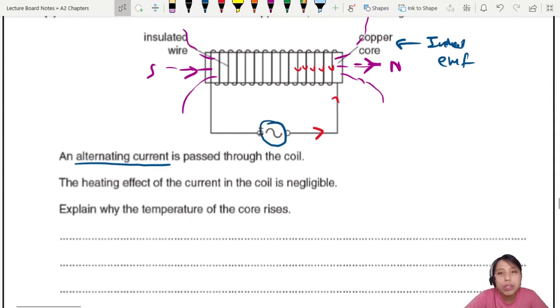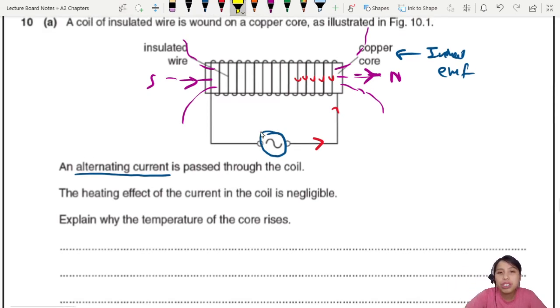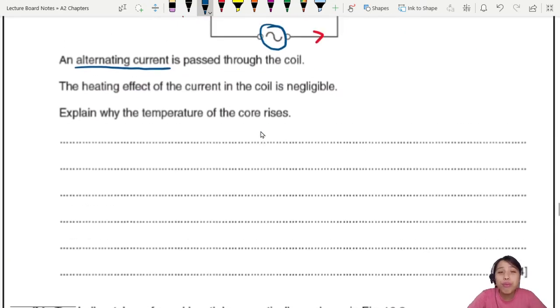So what are we trying to do here? The heating effect of the current itself in the coil is negligible. But explain why the copper core temperature rises. The long story short, copper core is very stressed. Too much change, gets hot. Kind of like us in life, if there's too many things changing, then we get very stressed, then we get overheated.